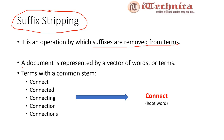A document is represented by a vector of words or terms. Consider terms with a common stem — the stem is the root from which a word is created. For example, consider the terms connect, connected, connecting, connection, and connections. If we strip the suffixes — ed, ing, ion, ions — all these words convert into a common stem: connect.